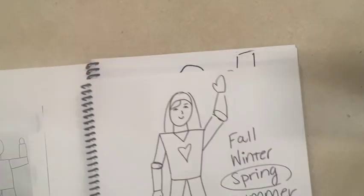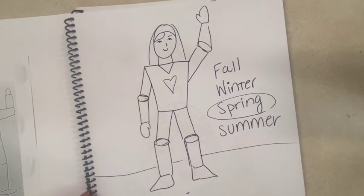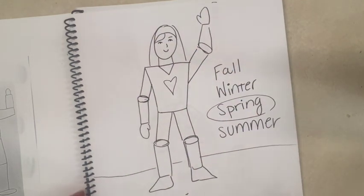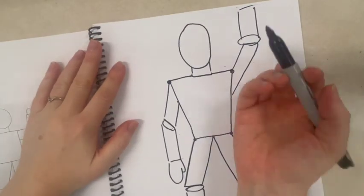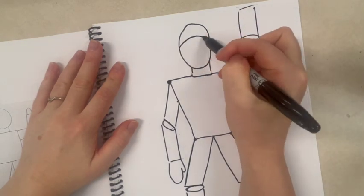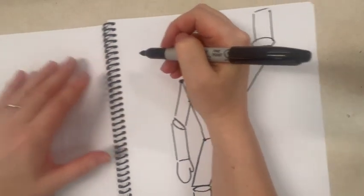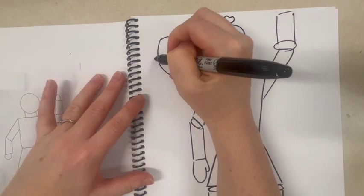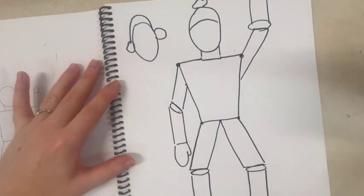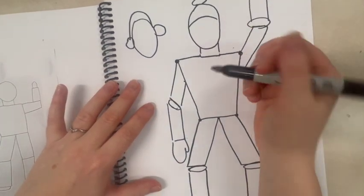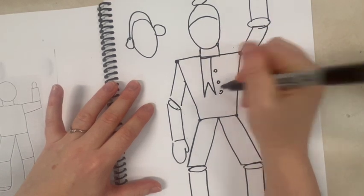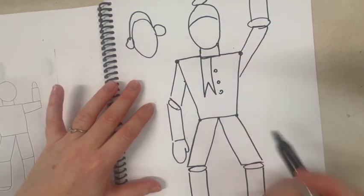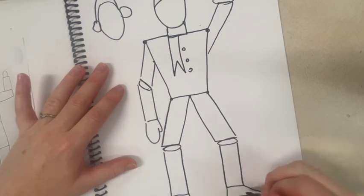Now you're going to choose what season you're going to do, and you are going to create an outfit for that season. So maybe I want to create winter. I can make a hat where my head is, I could make earmuffs, I could make a scarf, I could add buttons for my jacket. There's lots of different things that I can add.